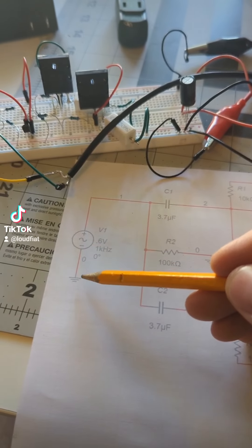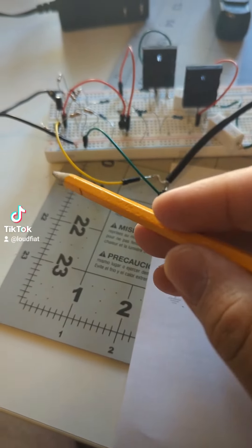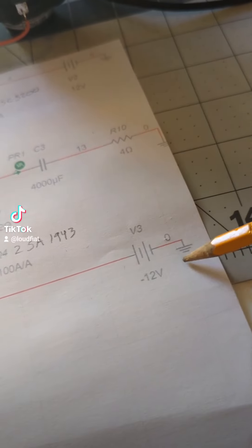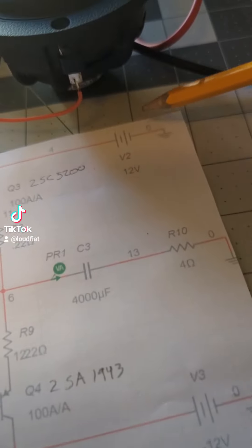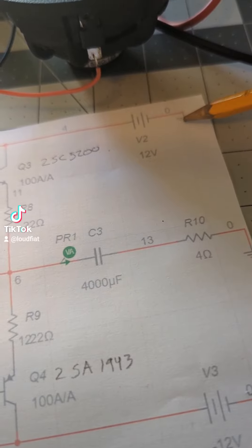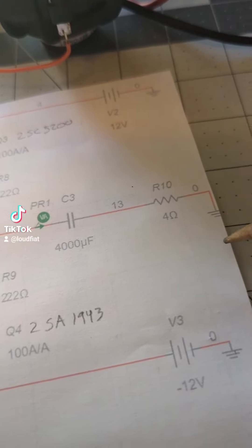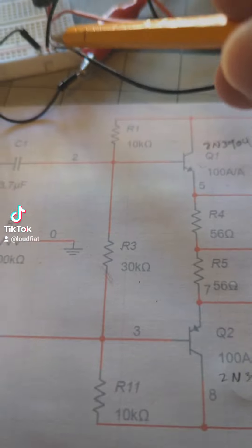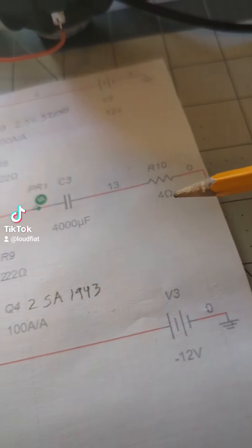So first we have the phone sharing a common ground here. So we have the ground bus. The negative 12 volt power supply goes into the ground. The positive 12 volt goes into the ground. Then we have the speakers also going into the ground. So that's common across the board.